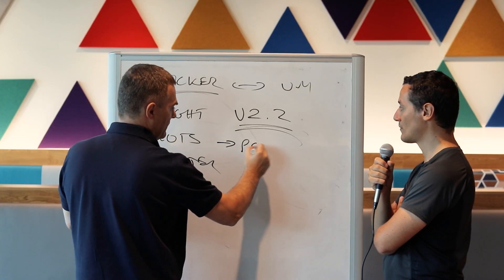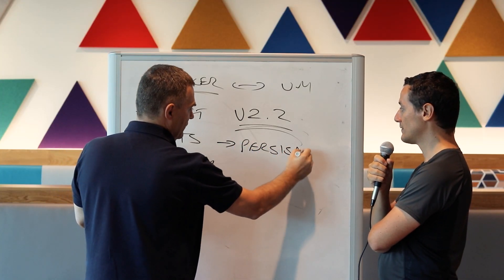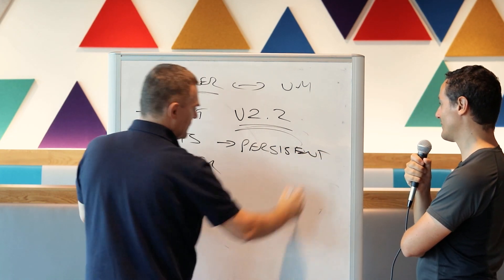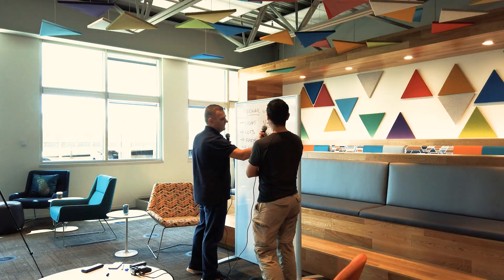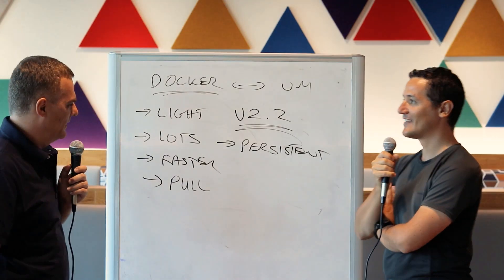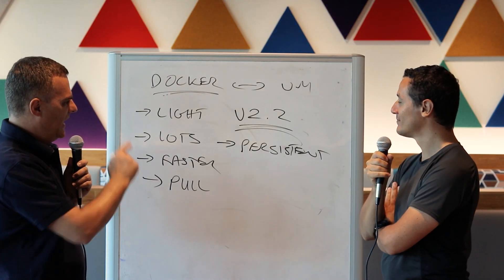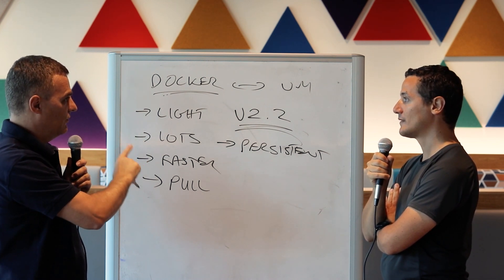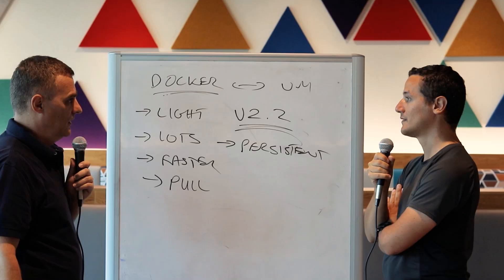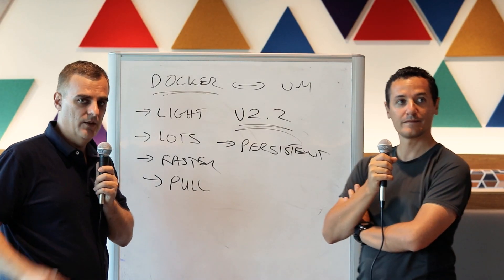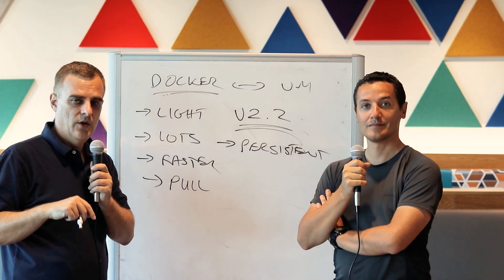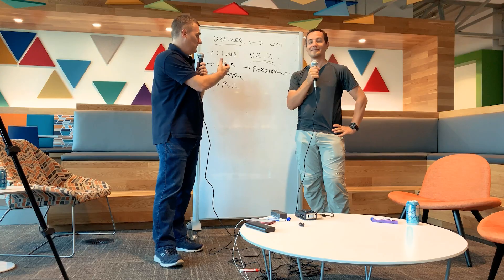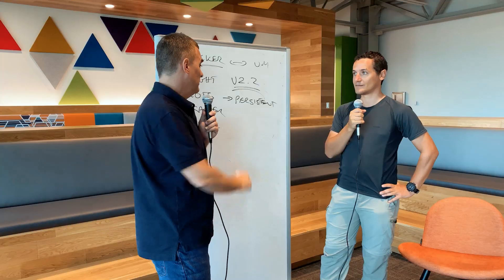So now we have persistency of Docker containers in GNS3 2.2. I'll add another video — I'll link it below this or it'll be further in the course depending where you're watching this — showing you how to make Docker containers persistent.